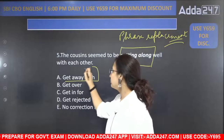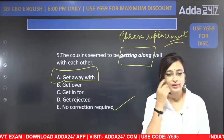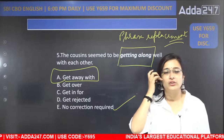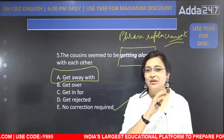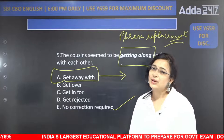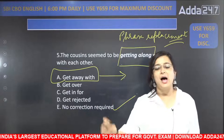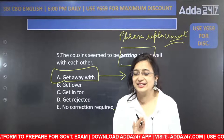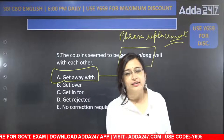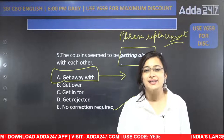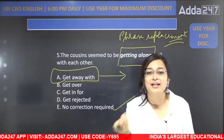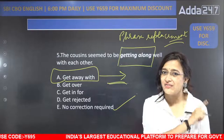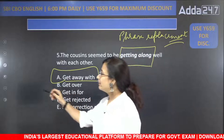An interesting learning from this question: when it says 'get away with' — get away with ka meaning hota hai aapne koi sin kiya, aapne koi apraadh kiya, aapne kuch toh bhi garbari ki, and you got away with it. That means aapko koi punishment nahi mili, aapko uske badle koi bhi punishment nahi mili. That is called getting away with it.